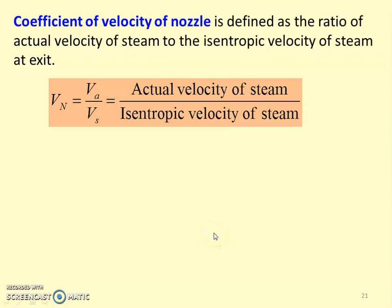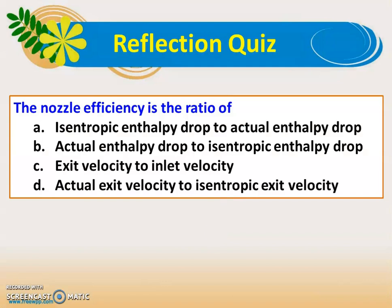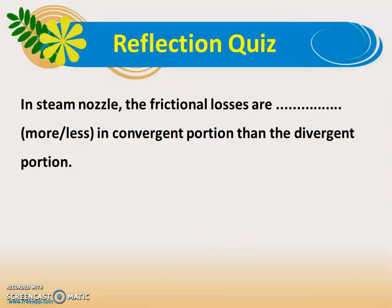A quiz question: nozzle efficiency is the ratio of — with four options given. The correct answer is option B: nozzle efficiency is the ratio of actual enthalpy drop to isentropic enthalpy drop. A second question: in a steam nozzle, frictional losses are [blank] in the convergent portion than the divergent portion. The answer is 'less', because the convergent portion is much shorter than the divergent portion.